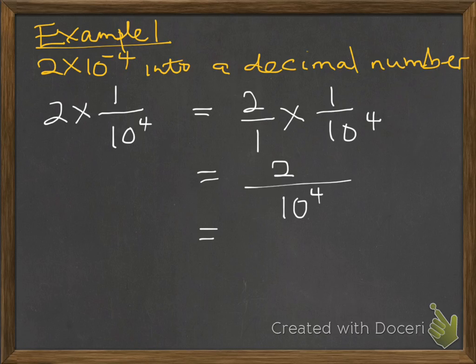So we know that the index of 10 denotes the number of zeros after 1, therefore it means 2 over 10,000. We have 4 zeros after 1, therefore it means 2 divided by 10,000, which is 0.0002.